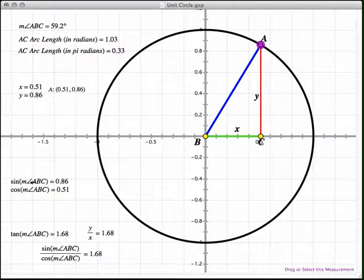As you can see, sine of the measurement of angle ABC is 0.86, which matches the Y value. That's the definition of the sine function - it finds the Y value that corresponds to the measurement of that angle in the unit circle.